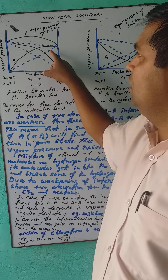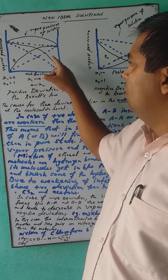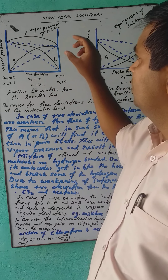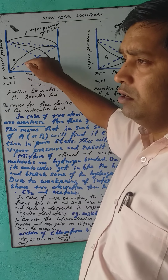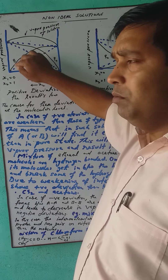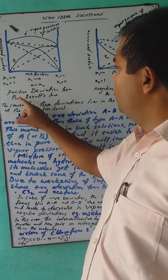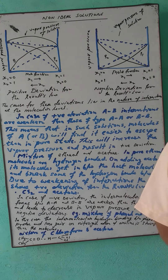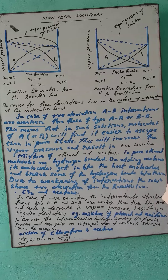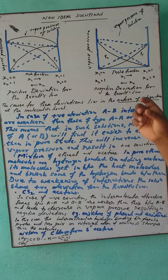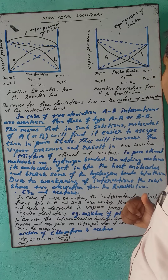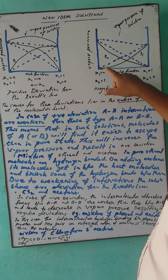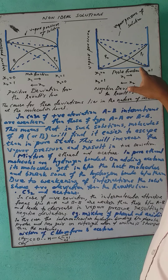This linear graph shows vapor pressure with an upward curve — that is called positive deviation from Raoult's Law. In the second case, there may be a negative deviation from Raoult's Law, in which the vapor pressure and mole fraction are indicated differently.